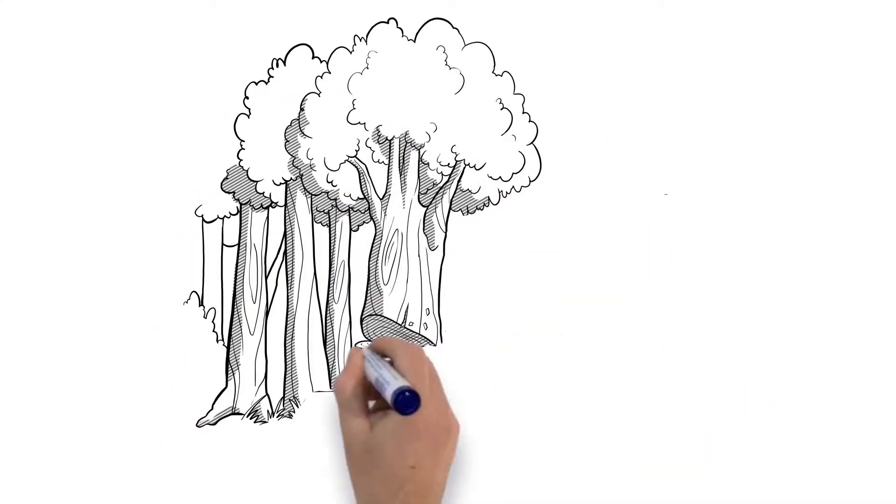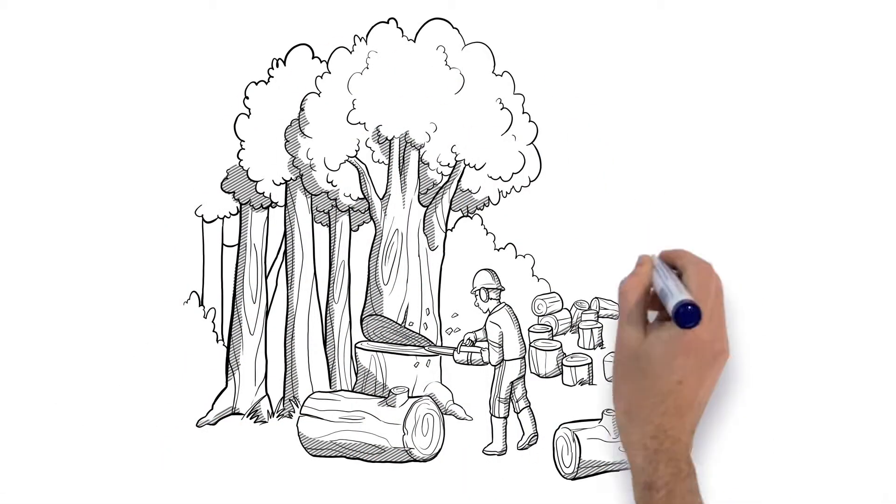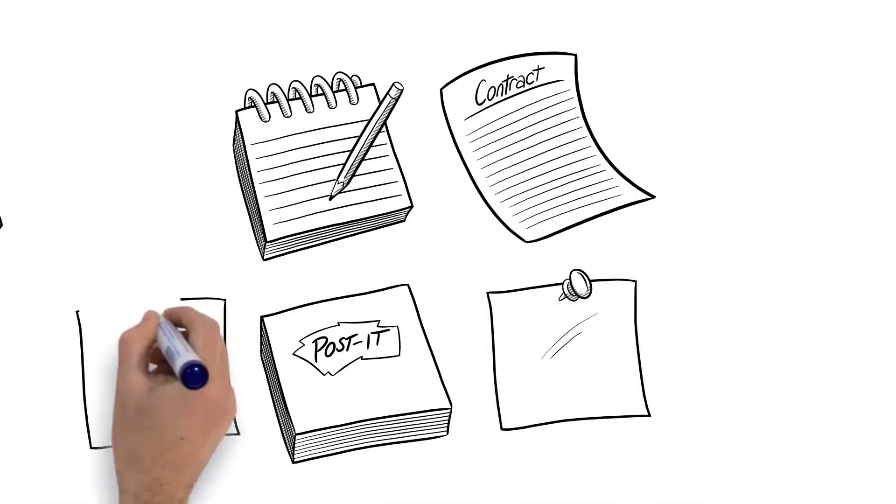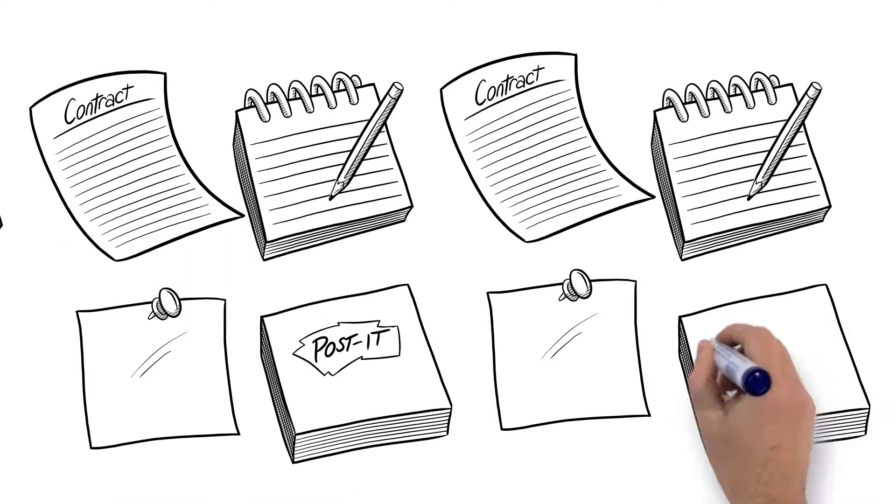Nearly 4 billion trees a year are cut down to be used in the paper industries. Every day you use roughly 2 pounds of paper. All those notes, post-its, notebooks, contracts and memos.